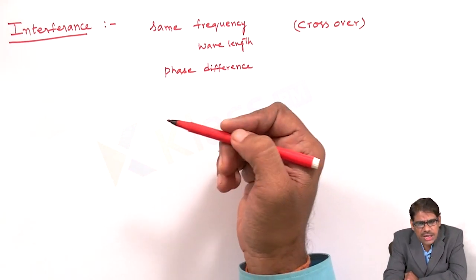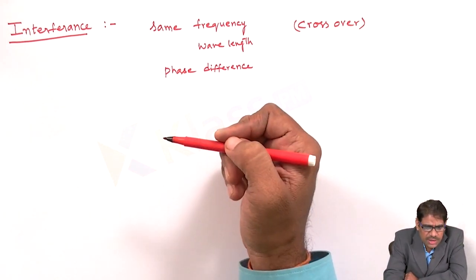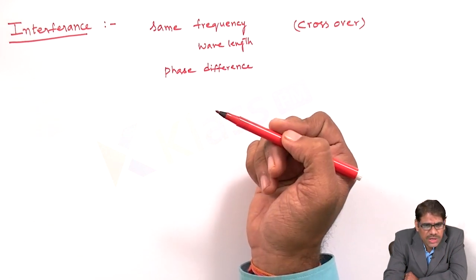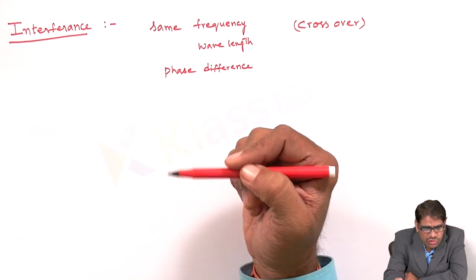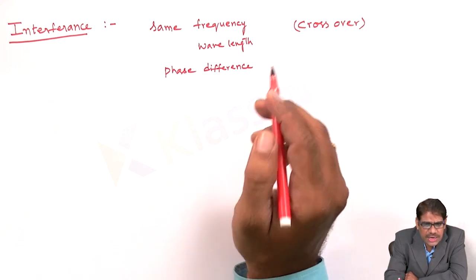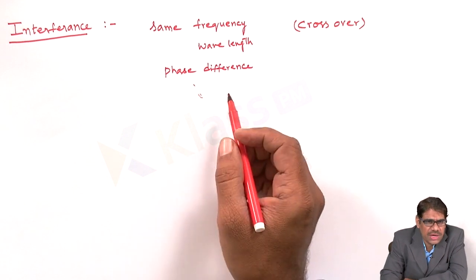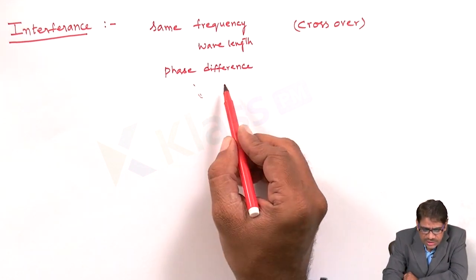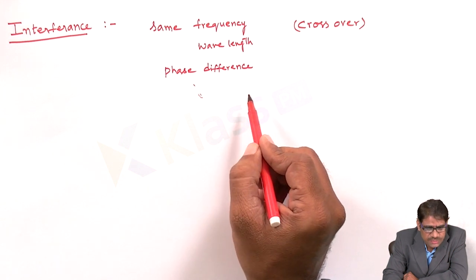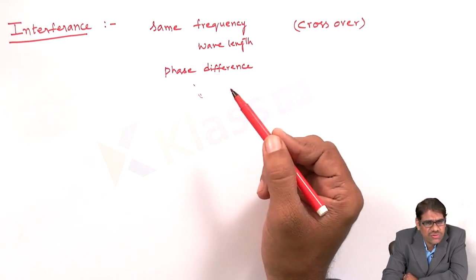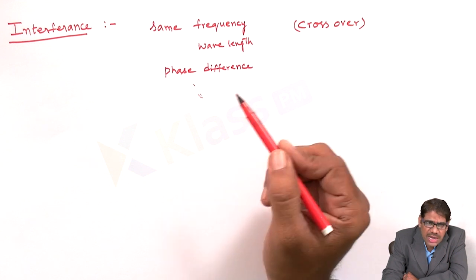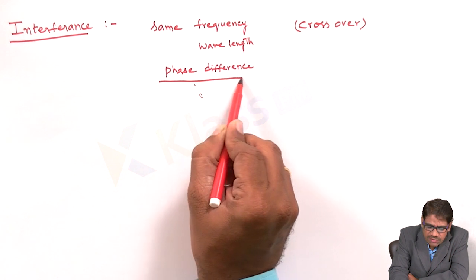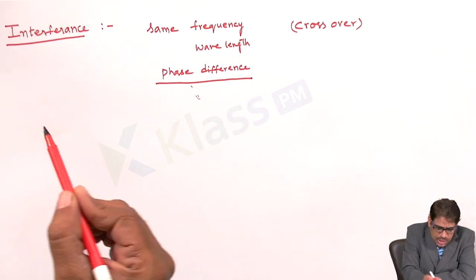Now, why we take only two waves is that for an interference pattern to take place in a particular medium, two waves get superposed in a respective region and evolve the different types of interference. To produce that kind of pattern, we require two sources — normally a point source, a narrow source, or an illuminated source. That is the basis for the interference pattern.